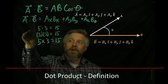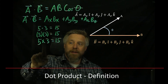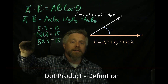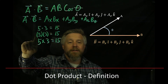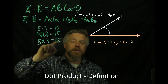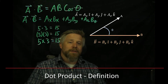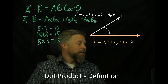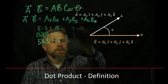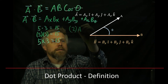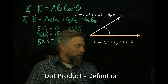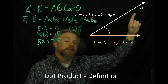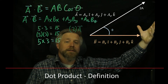If you want the dot product, use a dot. If you want the cross product, use an x. If you want a scalar product — multiplying a scalar times a vector — use parentheses. For example, if I multiply 2 times vector A, I get 2A: a vector in the same direction with twice the magnitude.